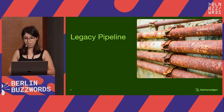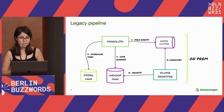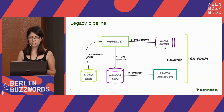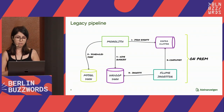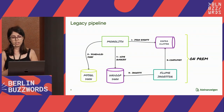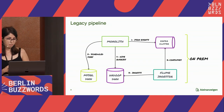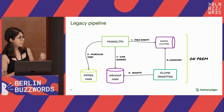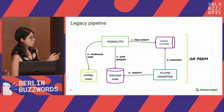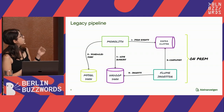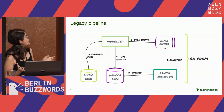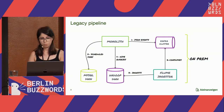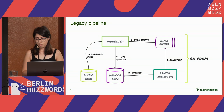First, I want to talk about the legacy pipeline we had at Kleinanzeigen. You see here the monolith — the main backend service of Kleinanzeigen. It was emitting analytical JSON events to a Kafka cluster, and we have a Loom ingester which consumes those events and ingests them to the Hadoop data warehouse. Later, the monolith runs Hive queries to aggregate data and store it in a MySQL data warehouse with some scheduled jobs. Everything you see here was on-prem.